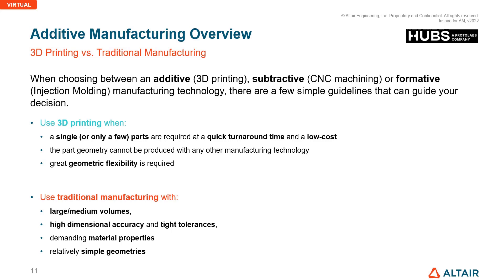When to use 3D printing: if you require a single part, are trying to cut cost, need quick turnaround time, or have great design flexibility. For traditional manufacturing: it is preferred for mass production, high dimensional accuracy and tolerances, relatively simple geometries, and demanding material properties that are widely available in the market.